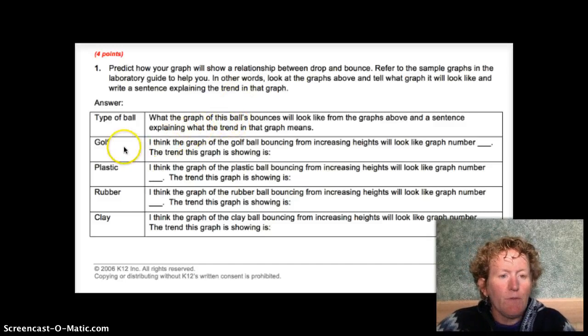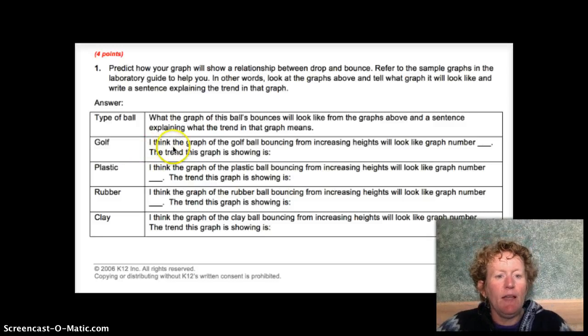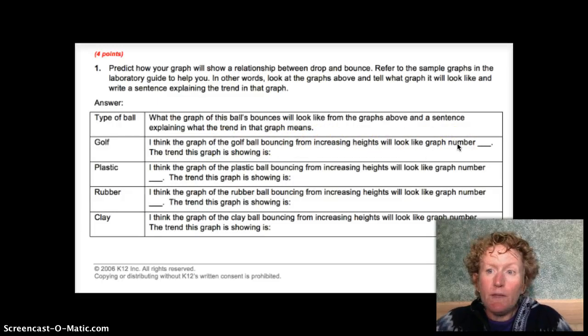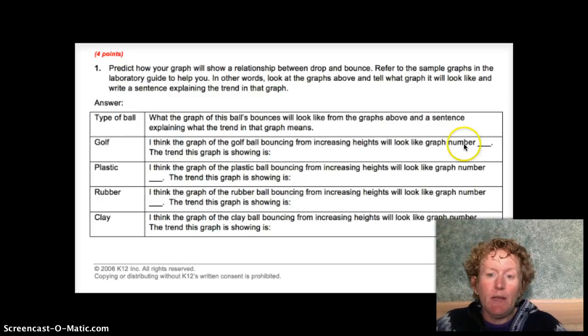So for the golf ball, think about what you know about golf balls. You can say, I think the graph of the golf ball bouncing from increasing heights will look like graph number 1, 2, 3, 4, 5, or 6. So it's up to you to make your hypothesis here and fill in this number.